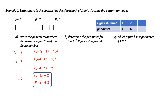Part B: determine the perimeter for the 24th figure using the formula. It makes sense to use the general term we derived. I'm looking for p when n equals 24, so I substitute 24 in for n. BEDMAS says I do multiplying before adding: 2 times 24 is 48, plus 2 gives a perimeter of 50 for the 24th figure.